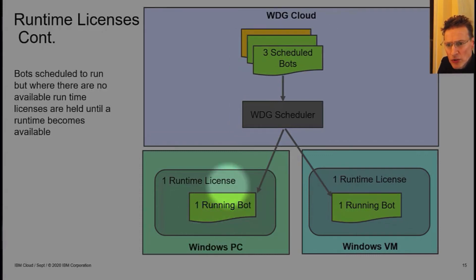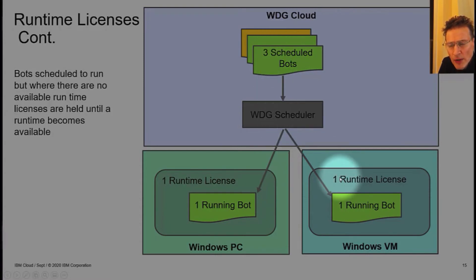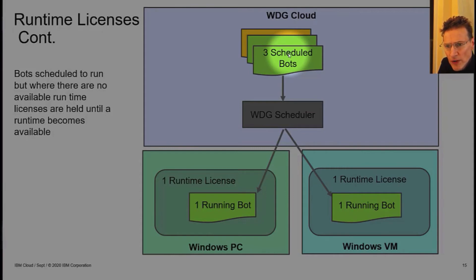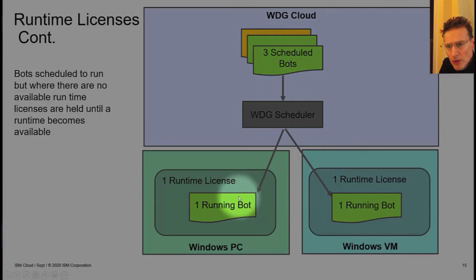In the next scenario, I've reduced the number of runtime licenses on the Windows VM to one. Now we have just two available runtime licenses but still three scheduled bots to run at the same time. We can run the first two - one on the Windows PC, one on the Windows VM - but the third bot will have to wait until one of these bots has finished. Once one becomes available, it takes over the runtime and runs to completion.